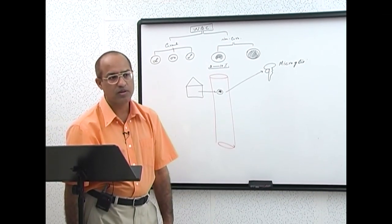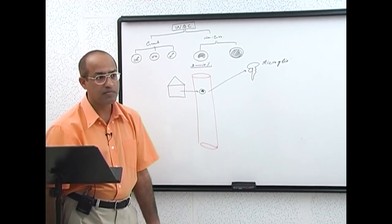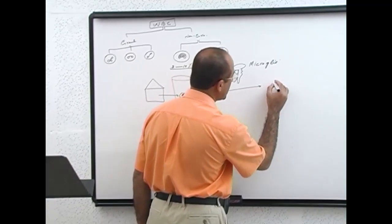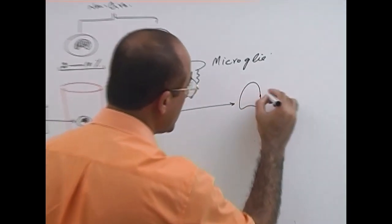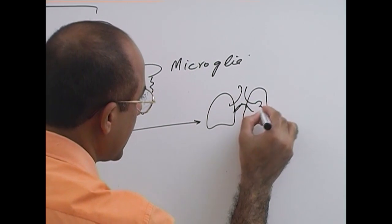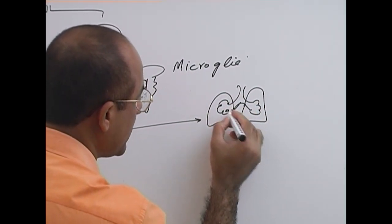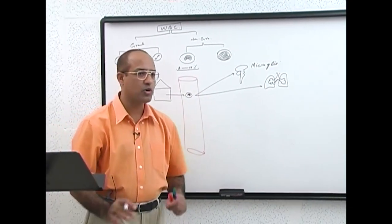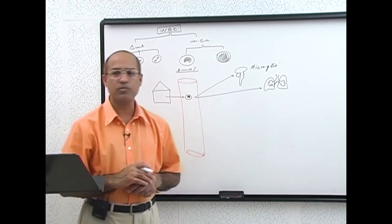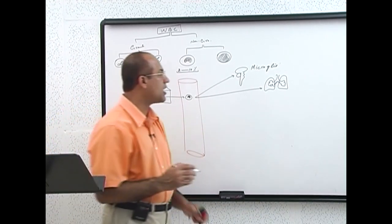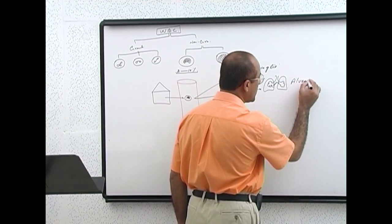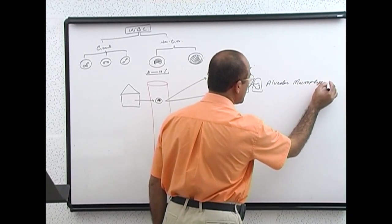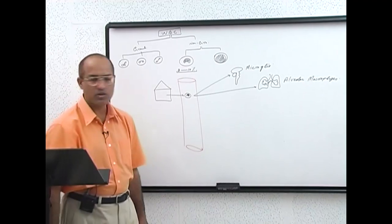They are called microglia. The microglia in the central nervous system are just monocytes which have taken permanent residence there. Then monocytes may also go to the lungs — always in the alveoli, macrophages are patrolling and looking for particulate matter to phagocytose. These are called alveolar macrophages, normally present in the air spaces and alveoli of the lungs.